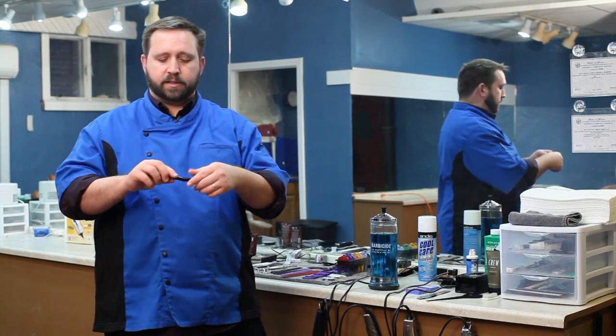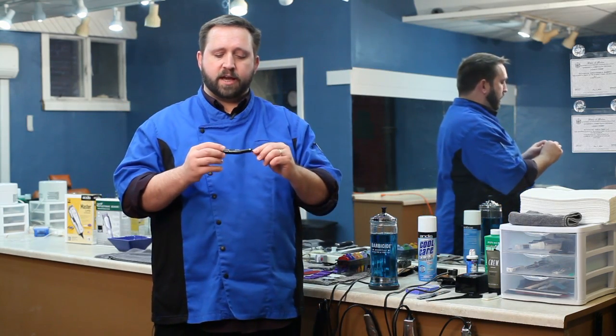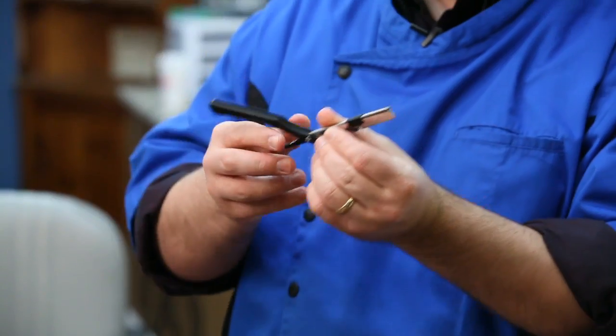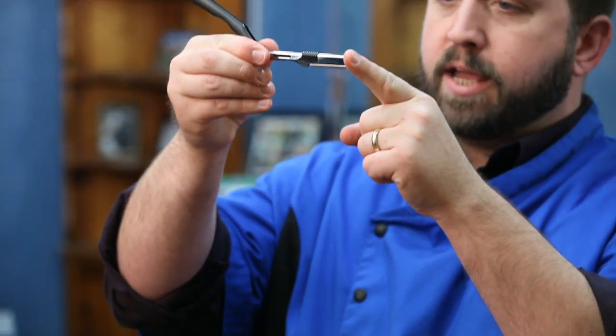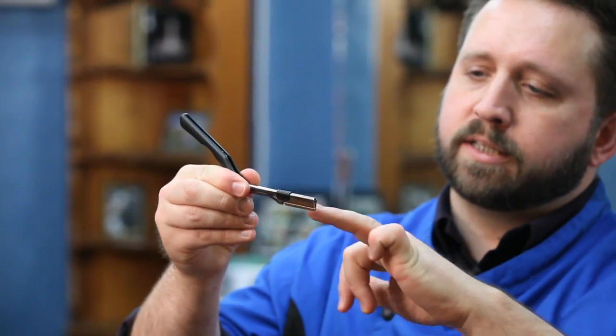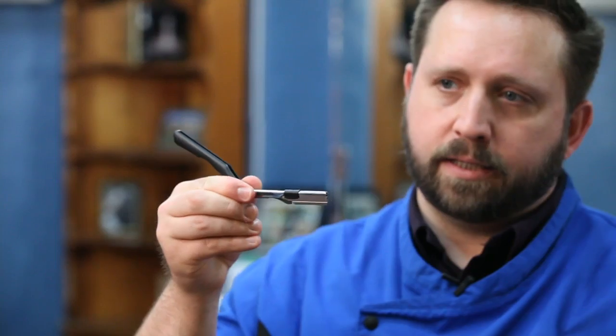The other blade that I use is made by Jatai, and it's called a nape razor. You'll notice it's a much smaller head, and there's no actual guard that you see on it. The guard itself is actually built into the blades that come with it.